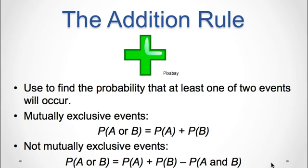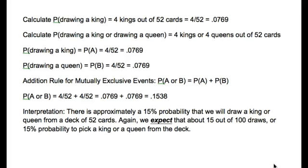Let's look at an example using a deck of cards and the addition rule for mutually exclusive events. Suppose a single card is selected from a standard deck of 52 cards. We will use the theoretical method for calculating probabilities because the outcomes are equally likely and easy to count. Calculate the probability of event A: drawing a king. A standard deck has four kings, so the probability of drawing a king is 4 out of 52, which equals 0.0769.